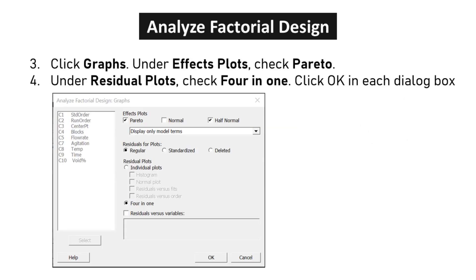Click Graphs. Under Effects Plots, check Pareto. Under Residual Plots, check 4 in 1. Click OK in each dialog box.